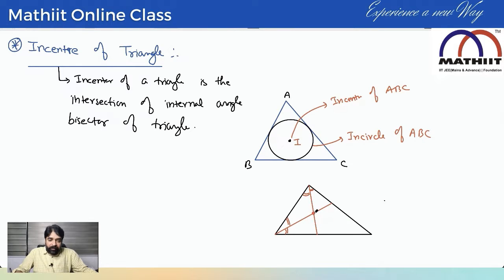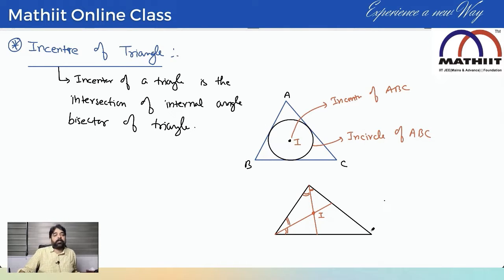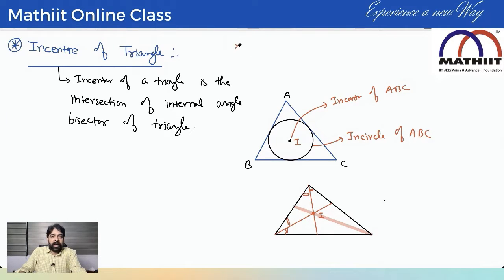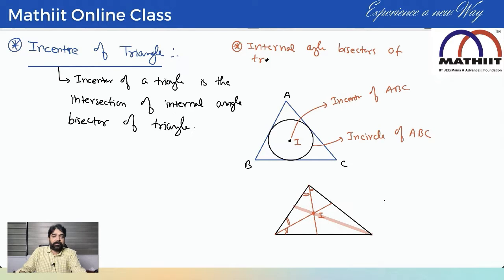The intersection point of these bisectors will be I. If you draw the third one also, it will also pass through the same point, because internal angle bisectors of a triangle are always concurrent lines.